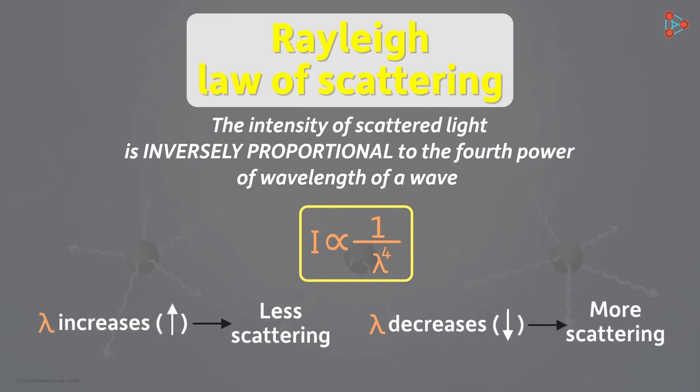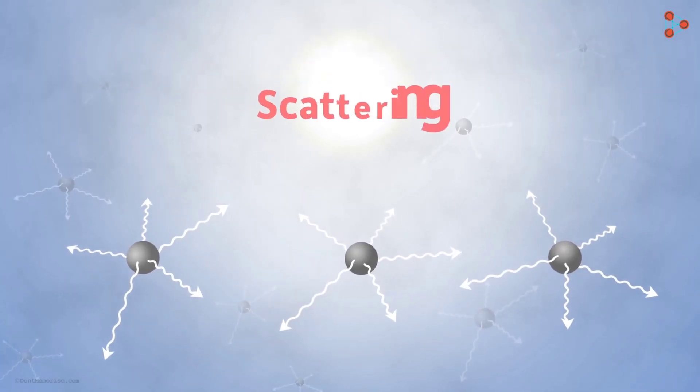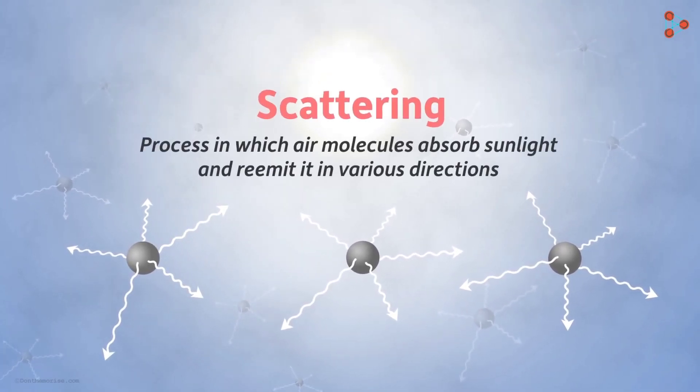But there is a certain condition for Rayleigh scattering to occur. The gas molecules must be at least a few hundred nanometers apart for the scattering to be successful. This is why Rayleigh scattering only occurs in the upper atmosphere where the air is least dense.